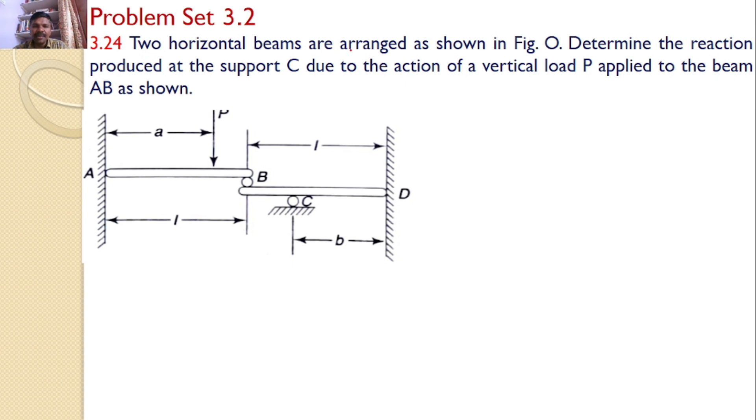Two horizontal beams are arranged as shown in figure O. Determine the reaction produced at the support C due to the action of a vertical load P applied to the beam AB as shown in the figure. So there are two beams AB and BD. AB and BD are supported at roller supports, and there is also a roller support at C. A force P is applied on the beam AB. Our interest is to find the reaction at C.